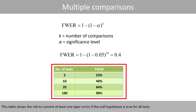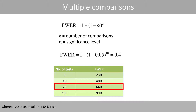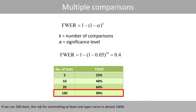This table shows the risk to commit at least one type 1 error if the null hypothesis is true for all tests. For example, we see that 5 tests result in a 23% risk, whereas 20 tests result in a 64% risk. If we run 100 tests, the risk for committing at least one type 1 error is almost 100%.